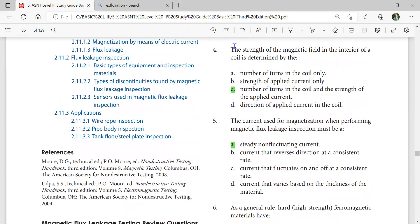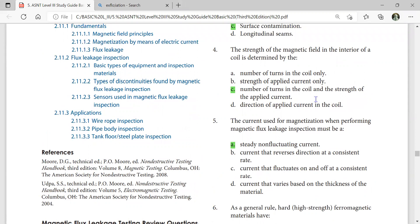The strength of the magnetic field in the interior of a coil is determined by the number of turns in the coil and the strength of the applied current.